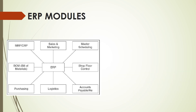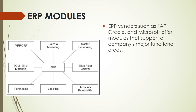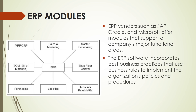Now let's talk about ERP modules. There are different ERP vendors in the market. Some of the most popular vendors include SAP, Oracle, and Microsoft, which offer modules that support a company's major functional areas. The ERP software incorporates best business practices that use business rules to implement the organization's policies and procedures. Business rules define specific instructions or constraints on how certain day-to-day activities should be performed. For example, business rules include a decision-making approval structure for invoice processing where only certain managers can sign off an invoice totaling a specific amount, or calculations in which a formula may be used to calculate revenues or expenses.